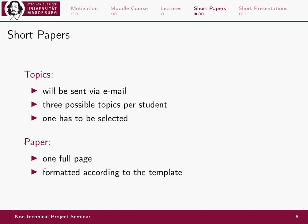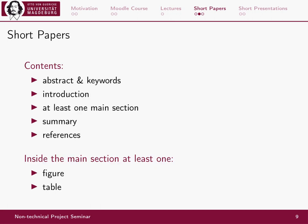You write a short paper of just one full page, formatted according to a given template — the IEEE (Institute of Electrical and Electronics Engineers) template, which is the quasi-standard for all publications in electrical engineering and other engineering sciences. The paper should include an abstract, keywords, an introduction, at least one main section, a summary, one to three references, and at least one figure or table within the main section.